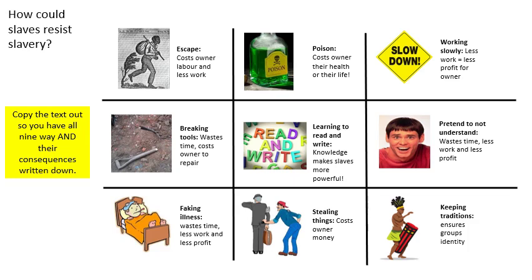Fifth is learning to read and write. Some slaves tried to educate themselves because education and knowledge makes anyone more powerful. Slaves felt they would feel more powerful if they were able to read and write.